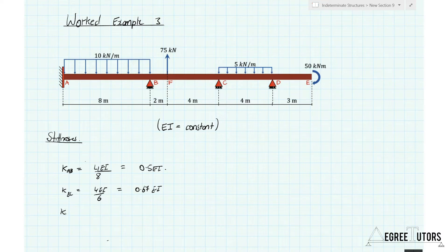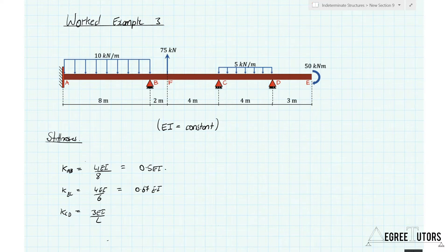The stiffness for CD is going to be 3EI over L because at C the structure is continuous over the support, giving it a rotational resistance, but at D it does fly over the support — it's just a cantilever and the structure is not connecting to anything at E. So there's no rotational resistance provided inherently in the structure. We have 3EI over L, which is 3 over 4, which is 0.75EI.